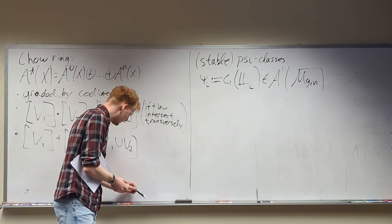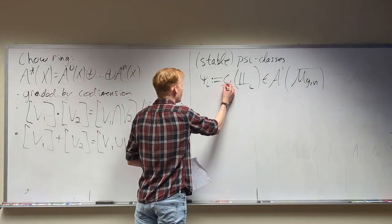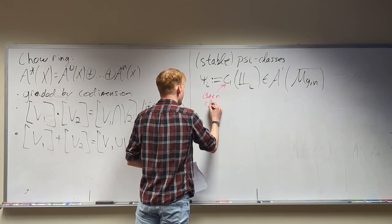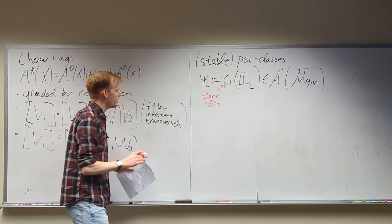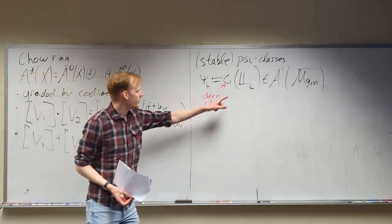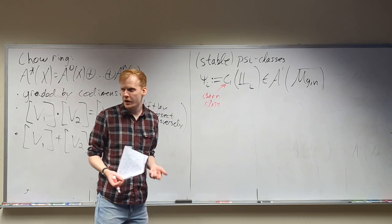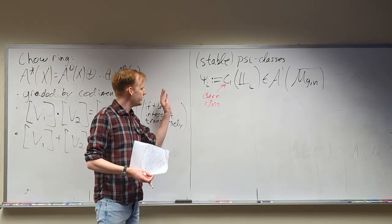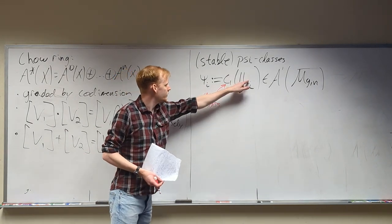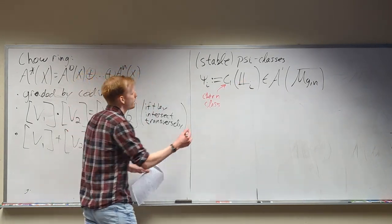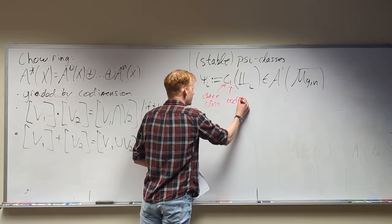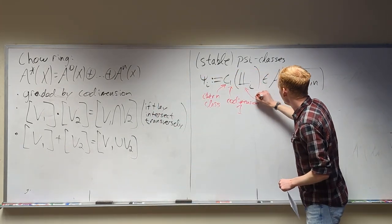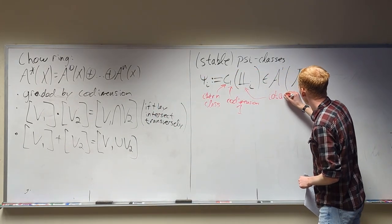The C there is for Chern class, and a Chern class is a geometric object associated to a vector bundle that very rarely comes with a nice picture, so you won't be getting one here. The 1 tells me it's codimension one, L is for cotangent line bundle, and that i down there is telling us it's the cotangent line bundle over the i-th marked point.